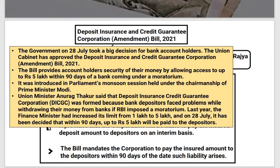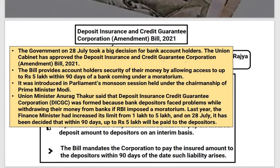The government took a very big decision for the bank account holders. The Union Cabinet approved the Deposit Insurance and Credit Guarantee Corporation Amendment Bill of 2021. Basically what this bill does is it provides account holders — people who have accounts in banks — security of their money by allowing access to up to rupees 5 lakh within 90 days of a bank coming under a moratorium. The moratorium period is the time during a loan term when the borrower is not required to make any repayment — it is the waiting period before the payment period.